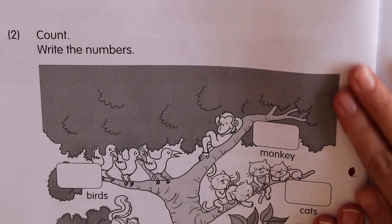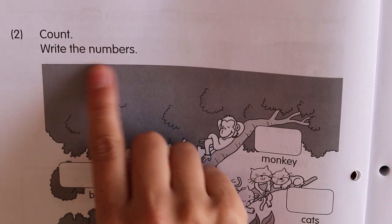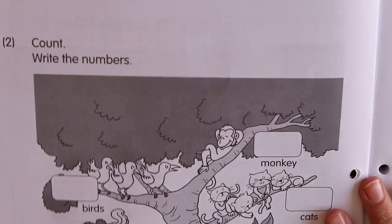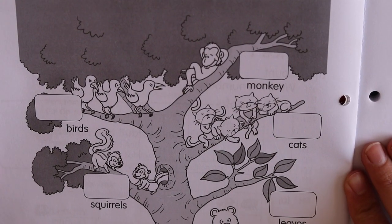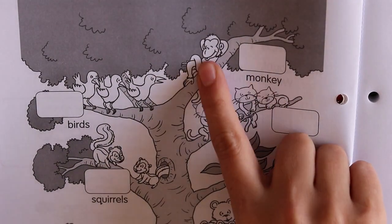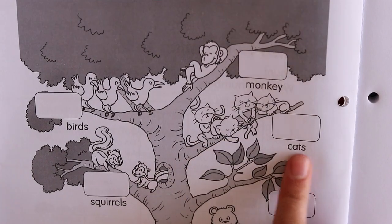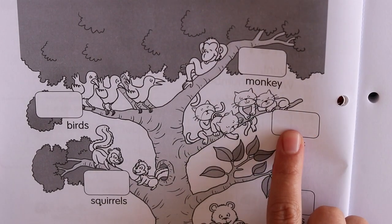Now, page 2, it says count and write the numbers. So there's a nice picture of a tree with a whole lot of animals. So here you have to count how many monkeys, how many cats, maybe you write them in the box.